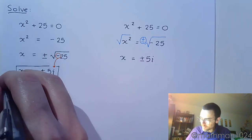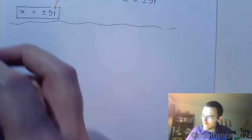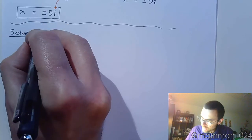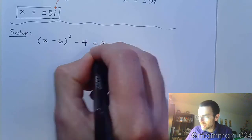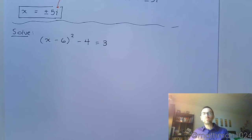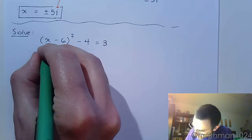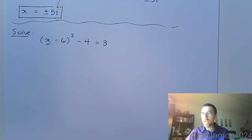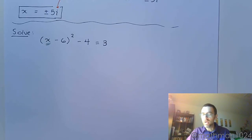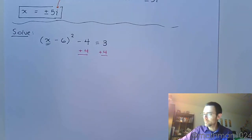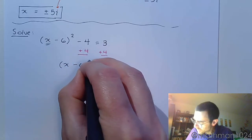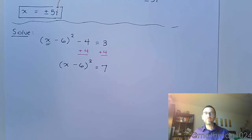Let's go on to the next example: (x − 6)² − 4 = 3. In this problem there is only one instance of the variable, contained inside a square. Being contained inside the square tells me the square root property is what I want to use. As mentioned, we don't use the square root property until the square is by itself, so I'm going to add 4 to both sides.